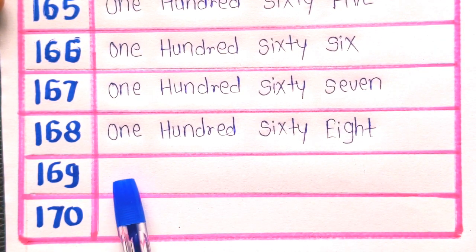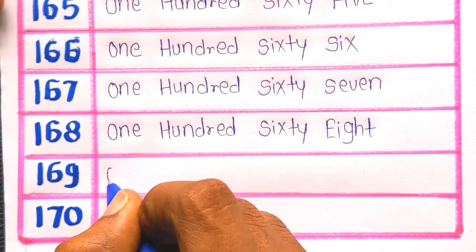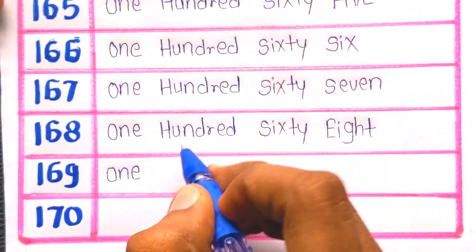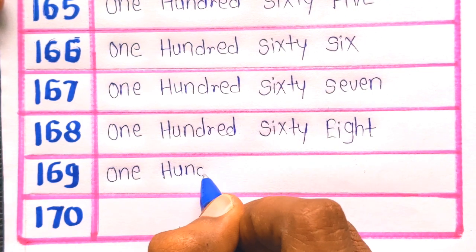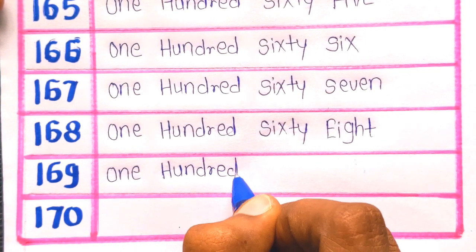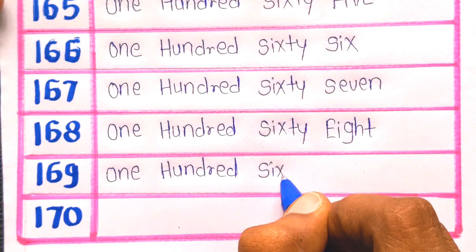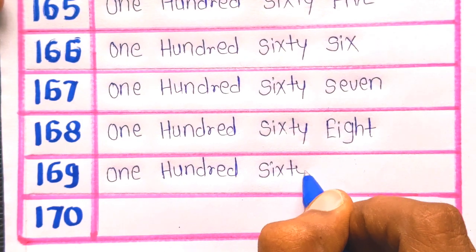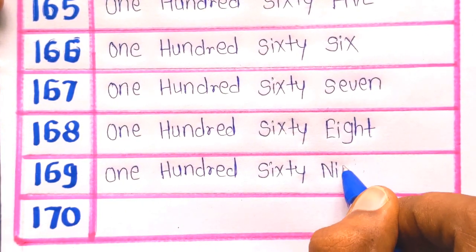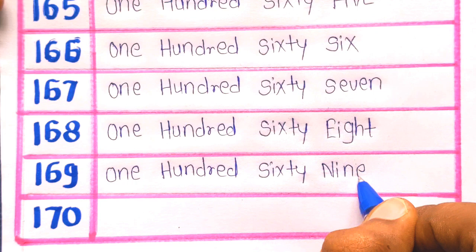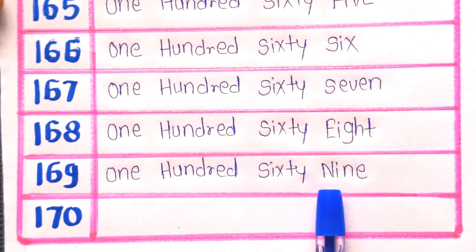Next number is 169: O-N-E, ONE, H-U-N-D-R-E-D, HUNDRED, S-I-X-T-Y, SIXTY, N-I-N-E, NINE. 169.